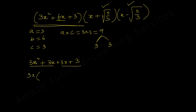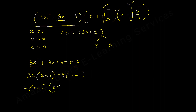Using factor by grouping: from the first two terms, 3x is common, leaving (x + 1). From the last two terms, 3 is common, also leaving (x + 1). Both brackets are the same, confirming correct factorization. Take (x + 1) as the common binomial factor, leaving (3x + 3), so the factored form is (x + 1)(3x + 3).